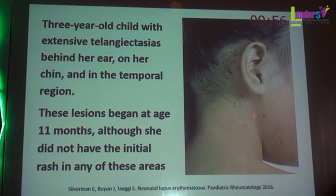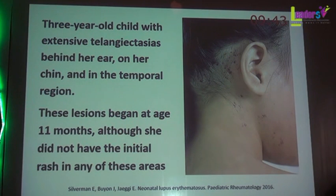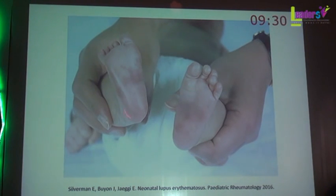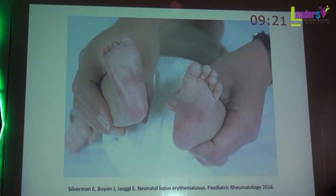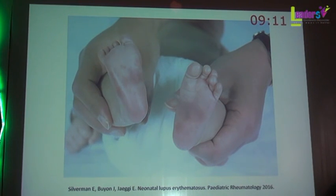Unusual clinical manifestations include a 3-year-old girl who developed telangiectasia in the retroauricular area, neck, and temporal region beginning at 11 months old, although initial neonatal lupus lesions were on her face. This telangiectasia was connected to a diagnosis of systemic lupus erythematosus and responded to laser treatment. Lesions can also appear on the soles of the feet and palms — nodular lesions on the sole resembling the punctate erythema seen in SLE patients, even though this area is not exposed to ultraviolet rays.